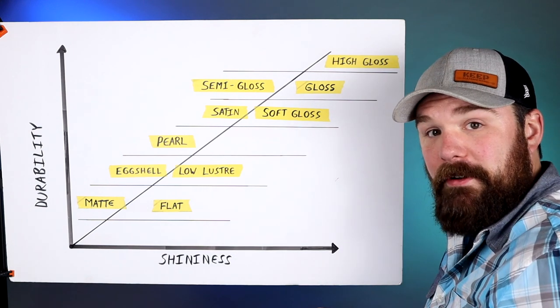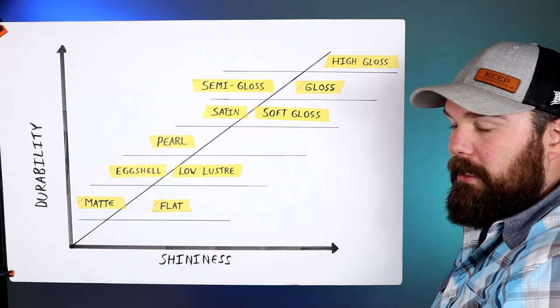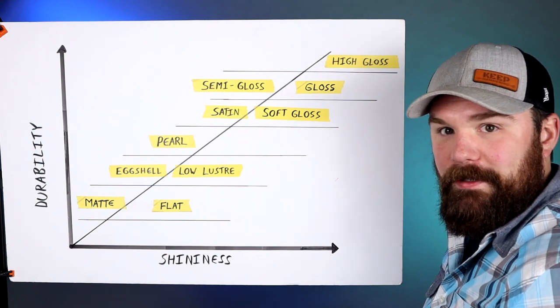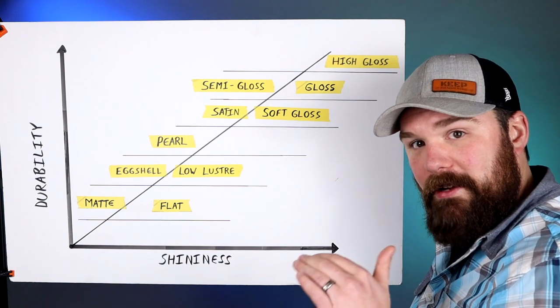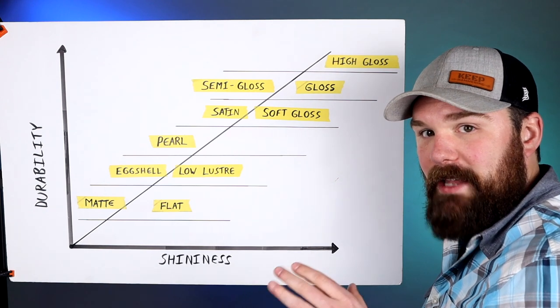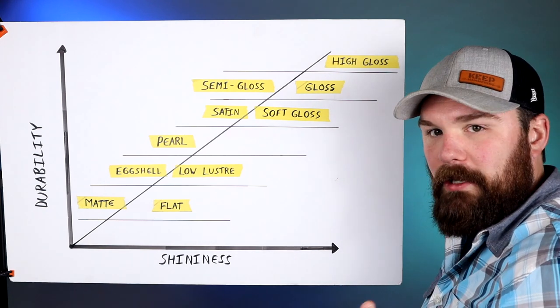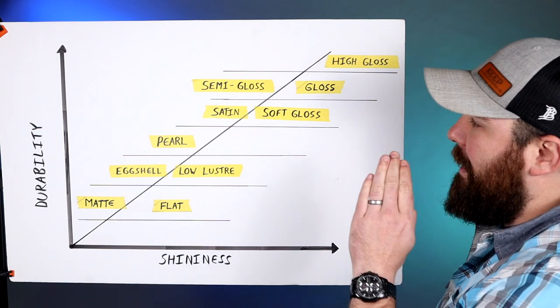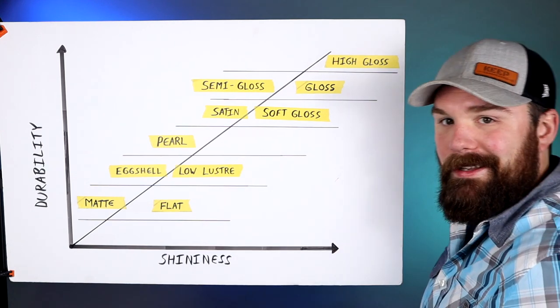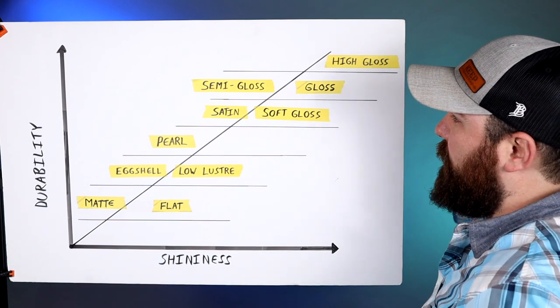And a lot of people like that soft gloss slash satin finish. It's considered a factory finish. So if you ordered a door, you know, a new door from a factory somewhere and it came in a specific color, chances are the sheen on that door is gonna be close to a satin or a soft gloss. Which is why a lot of our clients really like that, like their front doors, the shutters, all that good stuff in the soft gloss, which again is my favorite.